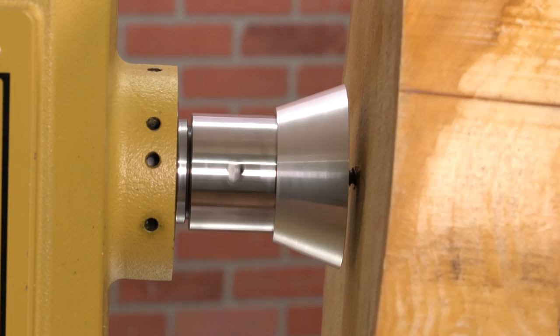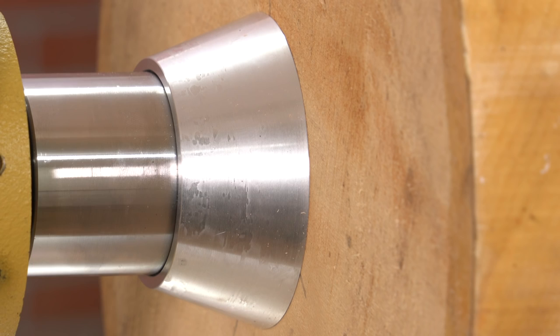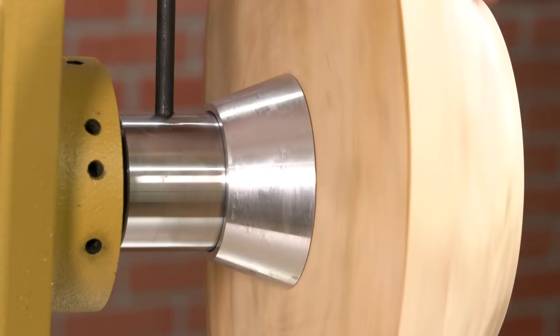To use, drill a hole in the blank, then thread the blank onto the screw until it's tight against the work face, and you're ready to turn. To remove your work, use the supplied lever and unscrew the piece from the chuck.